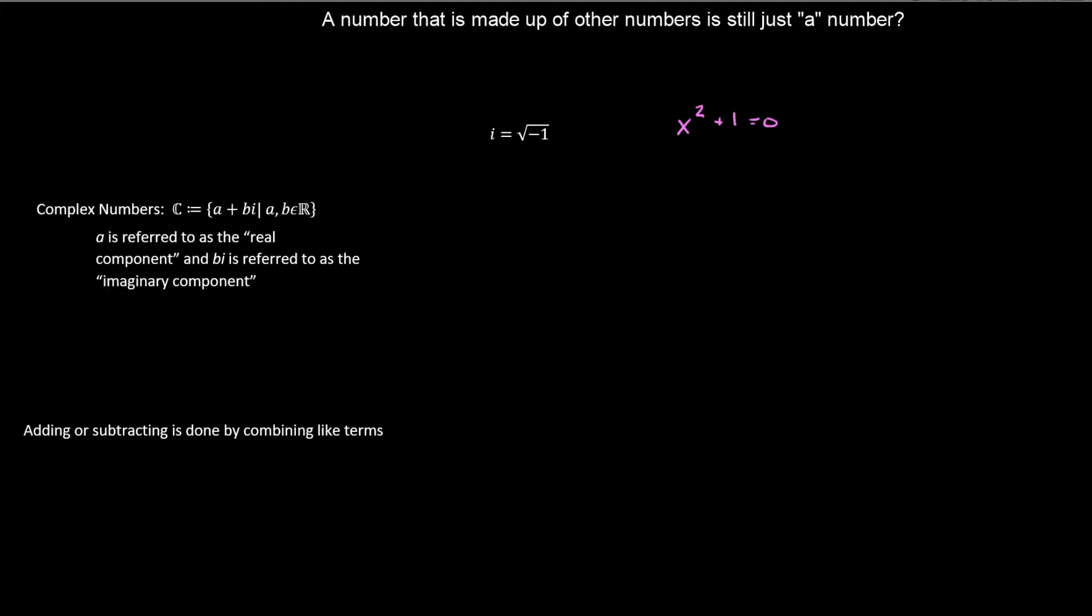Some examples are like 4 plus i, or 4 plus 1i. And then, say, negative 3 minus 2i. We get kind of lazy and we don't say plus negative 2i, we just say minus 2i. And then something as nasty, perhaps, as 4 plus the square root of 2, plus negative 8 minus the square root of 15i.